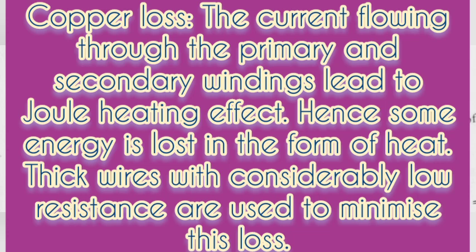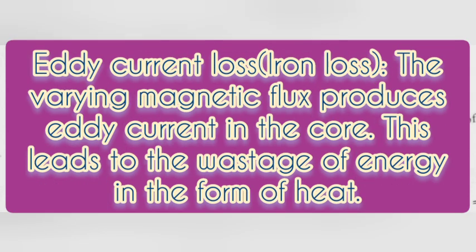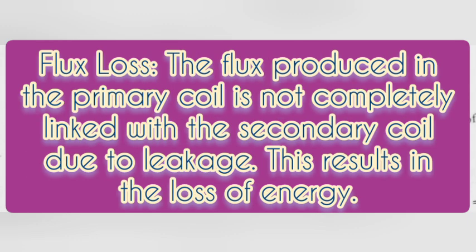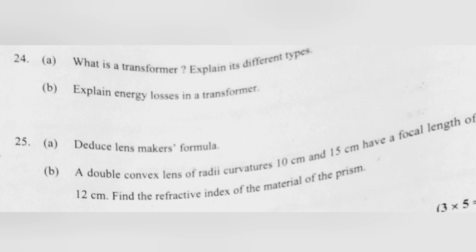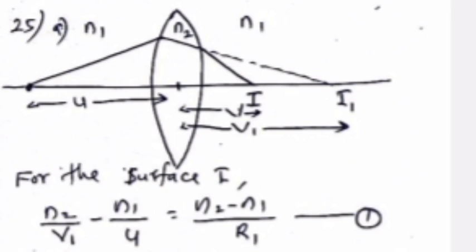(3) Eddy current loss (iron loss) — the varying magnetic flux produces eddy currents in the core, leading to wastage of energy as heat. (4) Flux leakage loss — the flux produced in the primary coil is not completely linked with the secondary coil due to leakage, resulting in loss of energy.